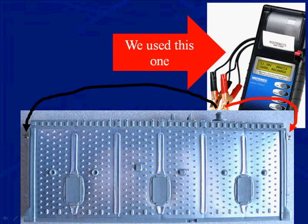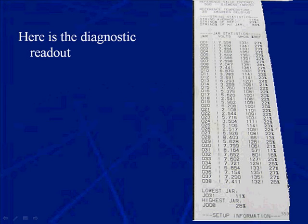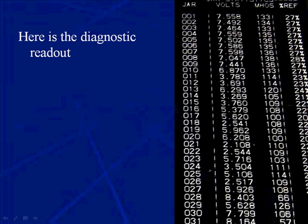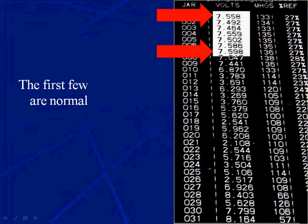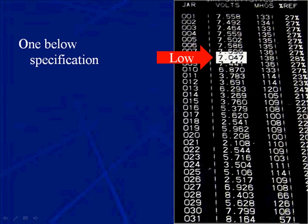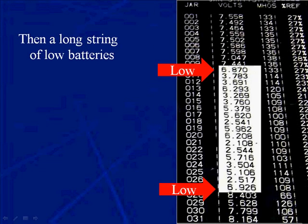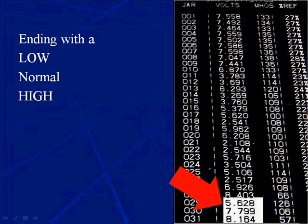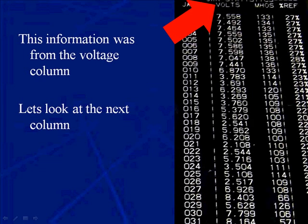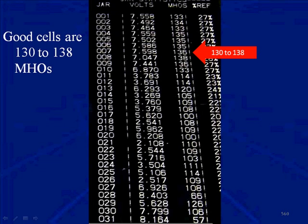Here we have a brick with six individual cells. We take our conductance tester and connect it to the positive and negative terminals of that brick. Here is the diagnostic readout — we'll invert it so you can see it easier. These are 7.5-volt batteries, or bricks. We can see the first few are normal, then one is below spec by 3 tenths, then a normal, then a string of low batteries, then a high one at 8.4 volts, and the ending ones are low, normal, and high. We've been looking at the voltage column.